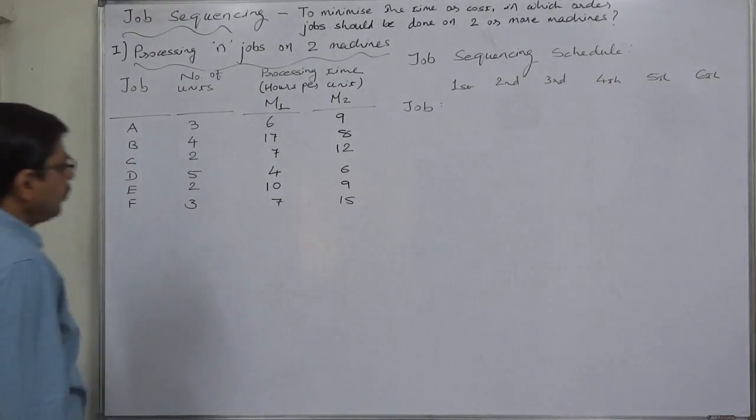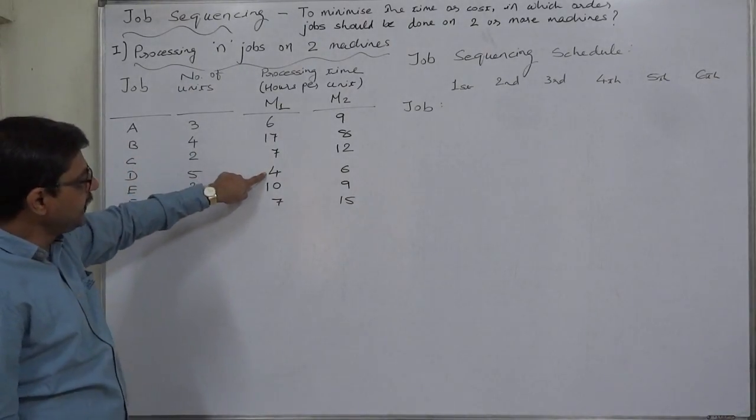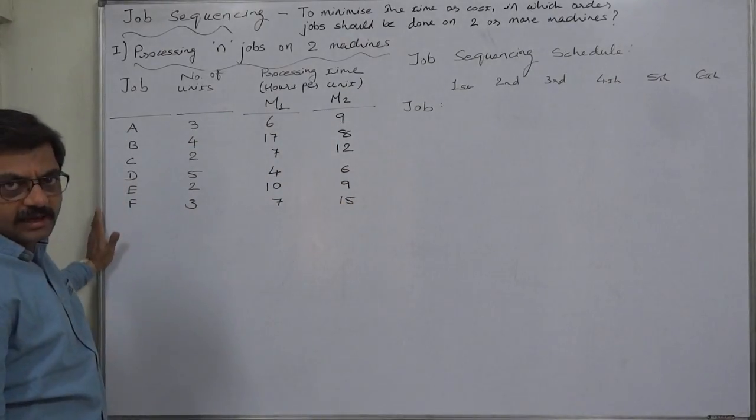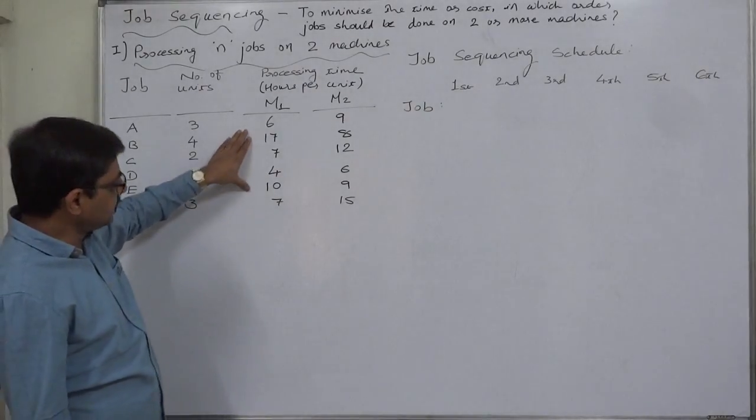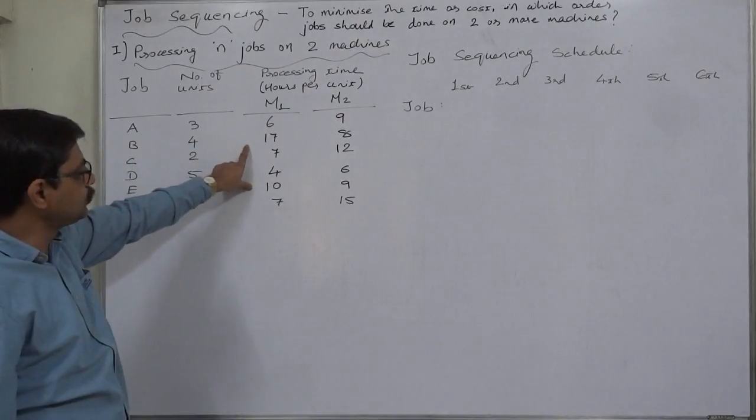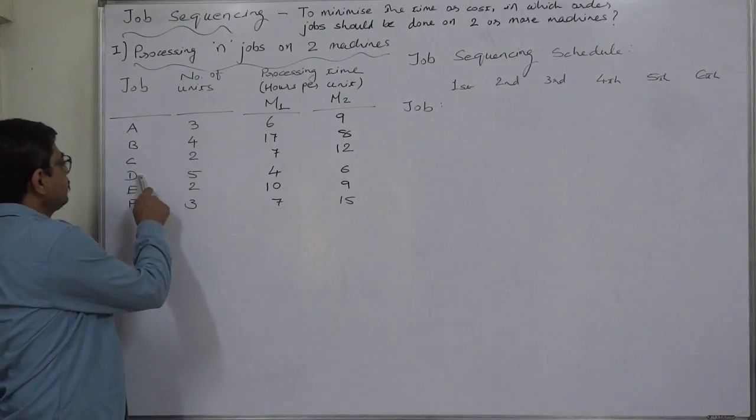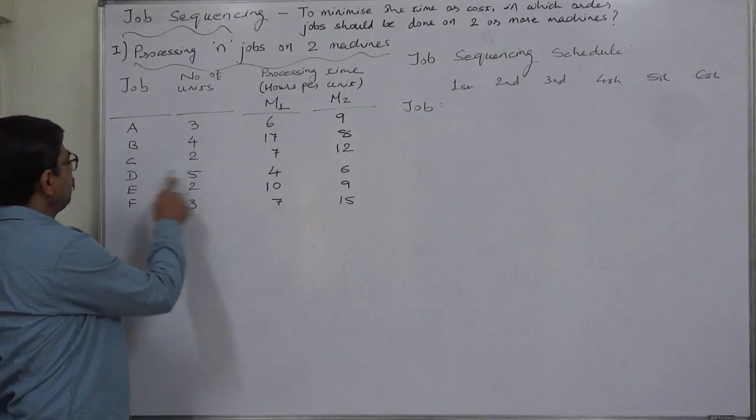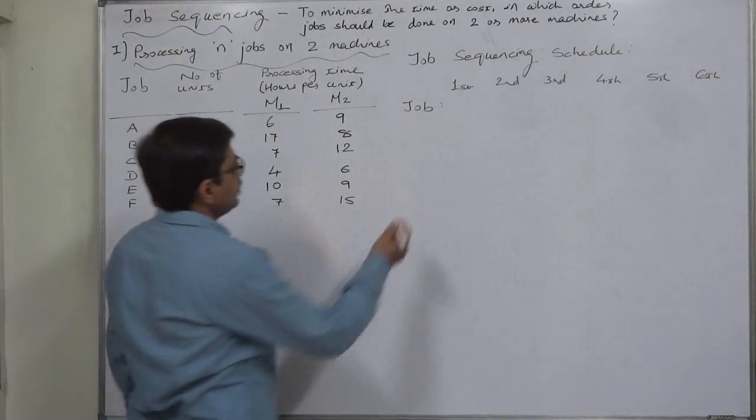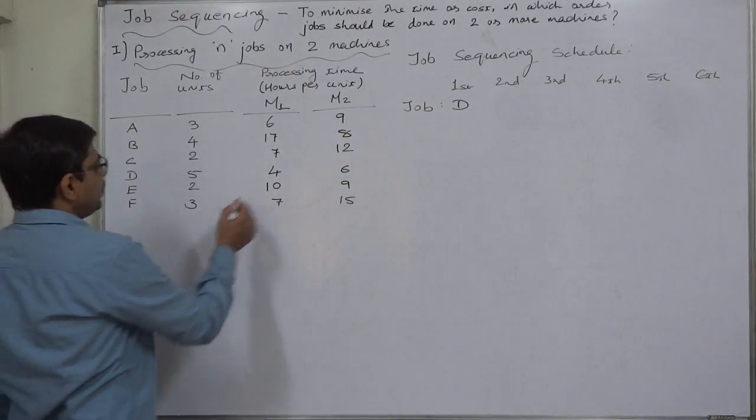Now in this schedule, job D has the minimum time. At this time, all six jobs are to be considered, and in these twelve time slots (6×2), four is the minimum—that is the time on machine one for job D. Since it is on machine one, job D is placed first.